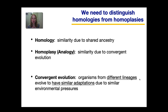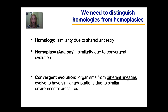Now to be able to determine accurate phylogenies, we need to be able to distinguish a homology from something called a homoplasy. A homology is a similarity that exists between two organisms due to their shared common ancestry. However, a homoplasy — sometimes called an analogy — is a similarity that's not due to a recent common ancestor, but due to something called convergent evolution. Convergent evolution is what occurs when organisms from different lineages, from different branches of the evolutionary tree, evolve to have similar adaptations due to similar environmental pressures.